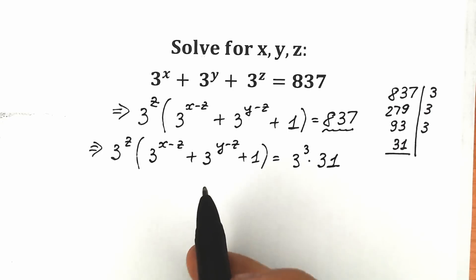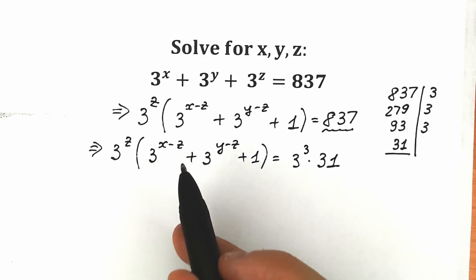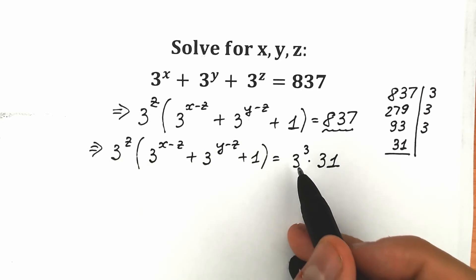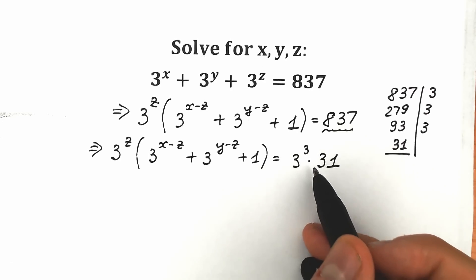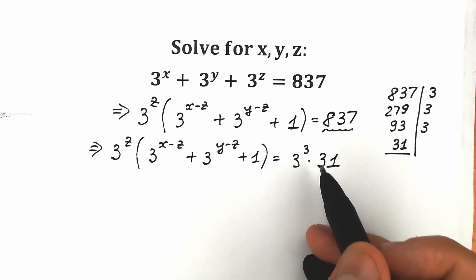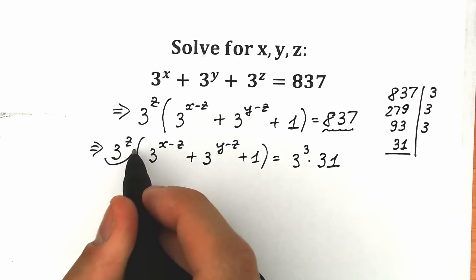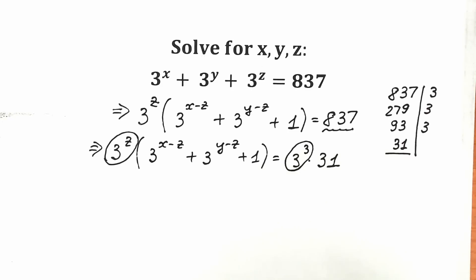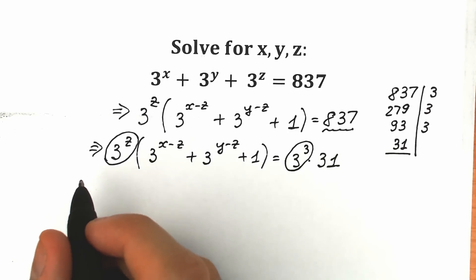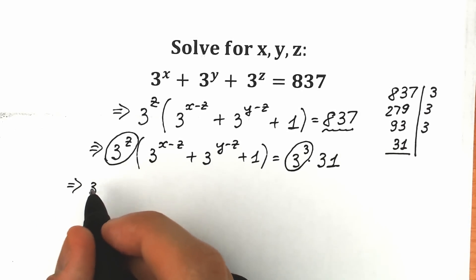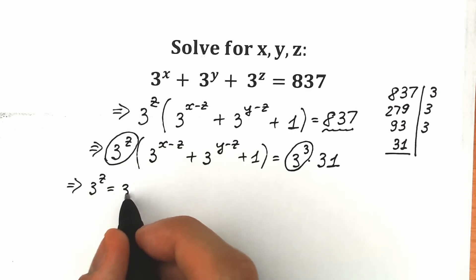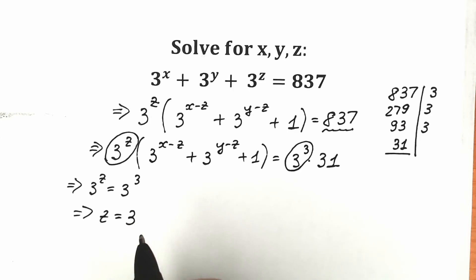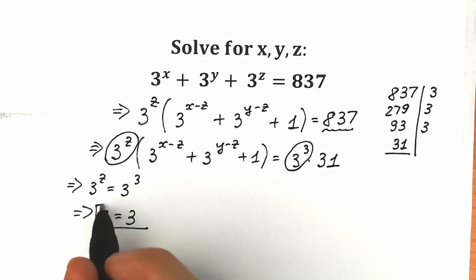On the left side we have a product of two expressions: 3 to the power z and the parenthesis. On the right side we have 3 to the power 3 times 31. So obviously from this step we can easily find z, because we have 3 to the power z on the left and 3 to the power 3 on the right. Therefore 3 to the power z equals 3 to the power 3, and z equals 3.